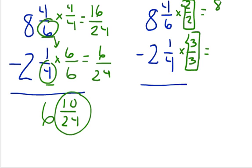4 times 2 is 8. 6 times 2 is 12. 1 times 3 is 3. 4 times 3 is 12. 8/12 minus 3/12 is 5/12.